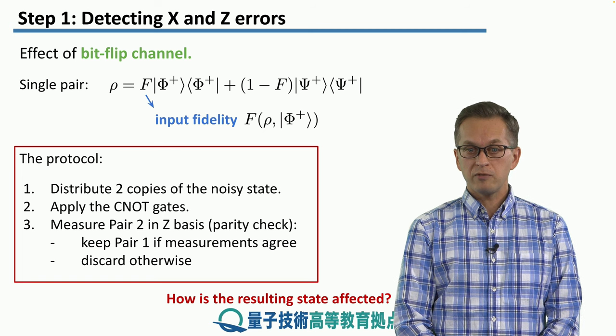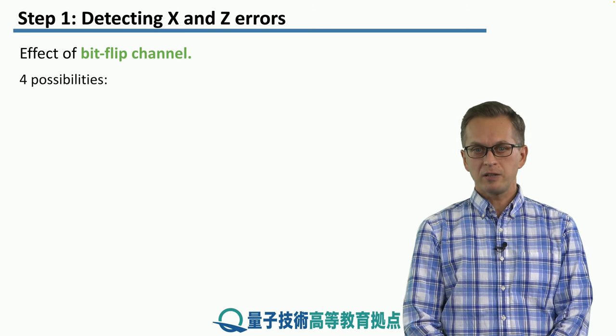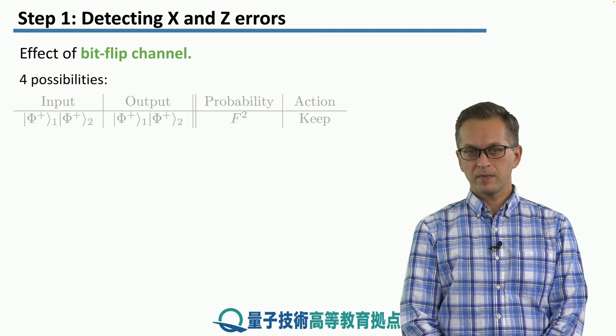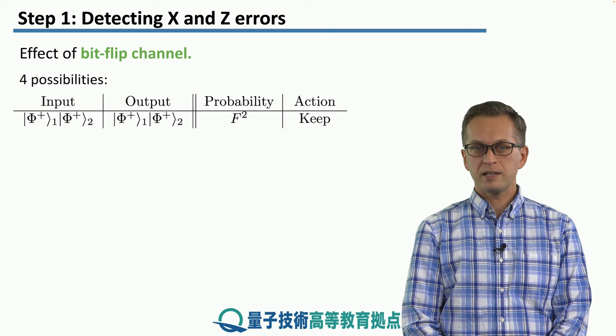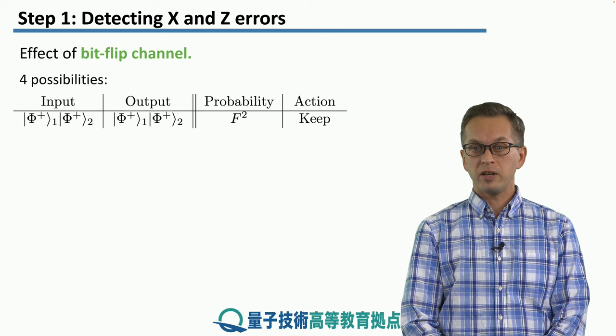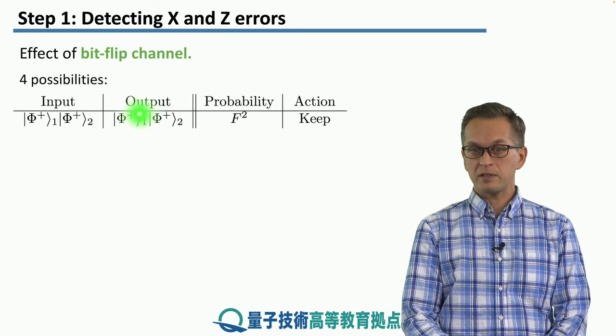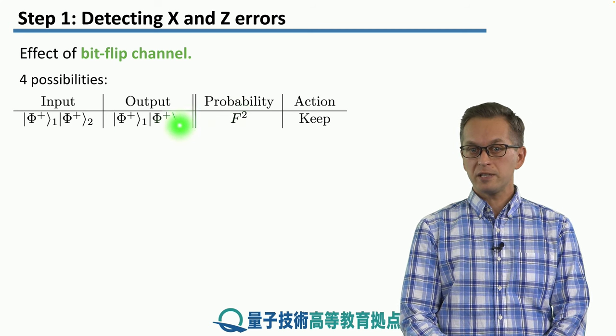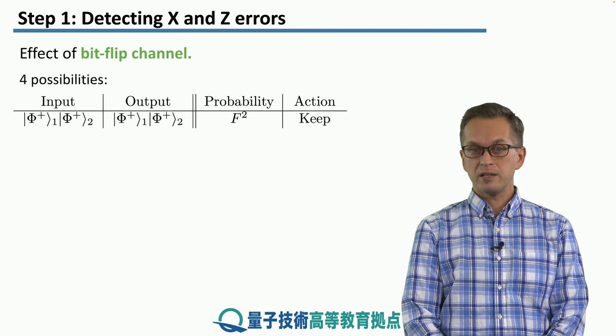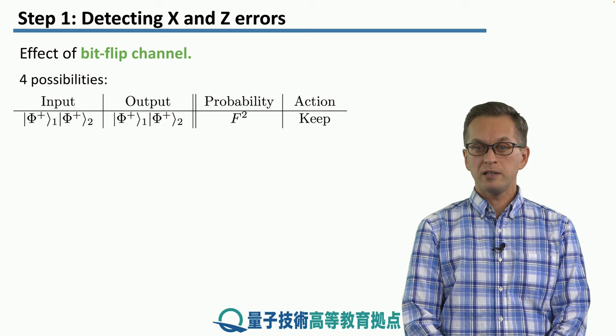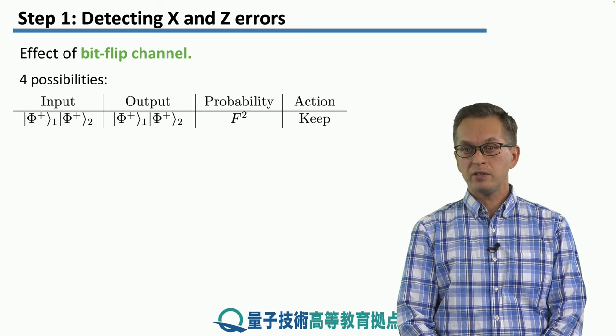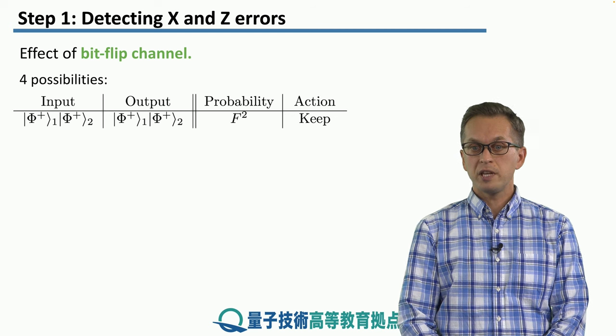So how is the resulting state affected? These are the four possibilities. The first possibility is that our input state is unaffected by the error. This happens with probability F squared. When we measure the second pair in the Z basis, we get correlated outcomes, meaning that the parity is even, so we keep pair one.